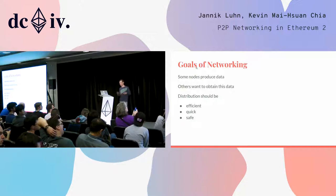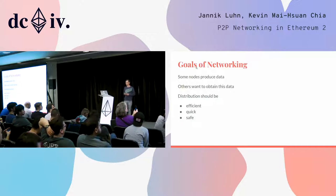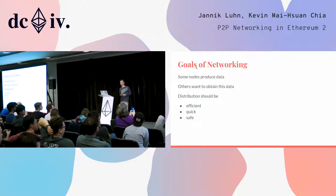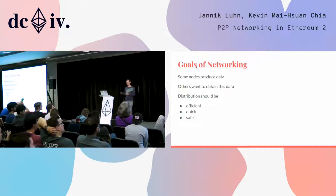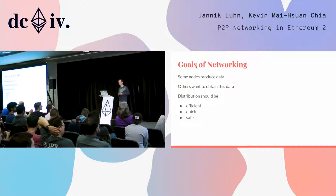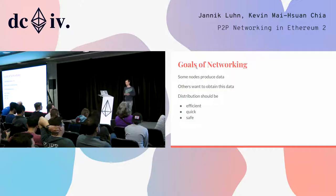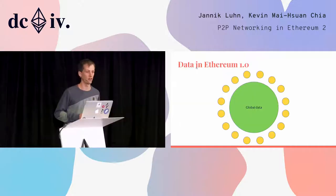Let's start with the very basic things: our goals of networking, what we actually want to do. We have some nodes that produce data and others want to obtain this data, so we need a way to distribute this. That way should be efficient, it should be fast, and it should also be safe.